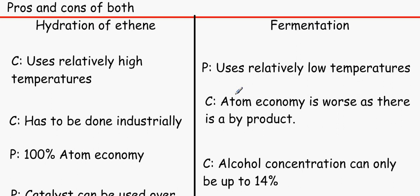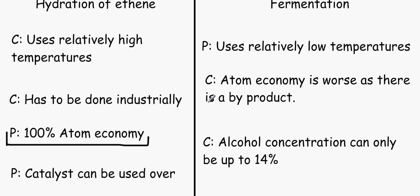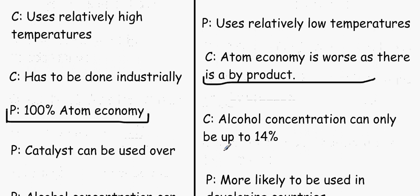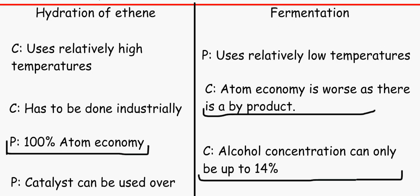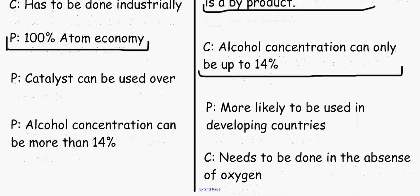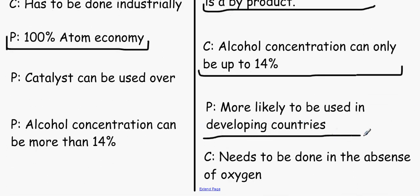Now the pros and the cons of both. Well hydration of ethene uses relatively high temperatures. That means we can't use it in developing countries. We have to do it industrially. The other one is that it also has 100% atom economy which is great. That means we're not making any byproducts, whereas the fermentation one does have a byproduct which is CO2. Also, you can only make stuff up to beer with this, but with hydration of ethene we can make wine and tequila and such like. This is more likely to be used in developing countries and it needs to be done in the absence of oxygen.